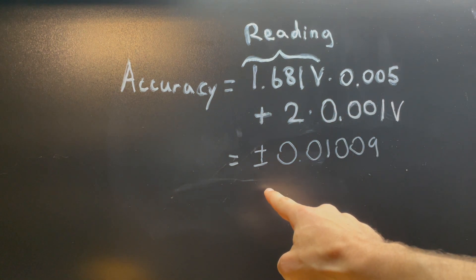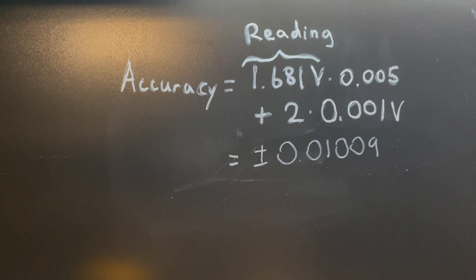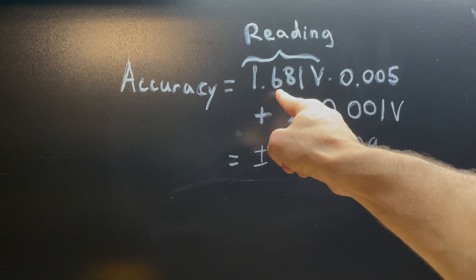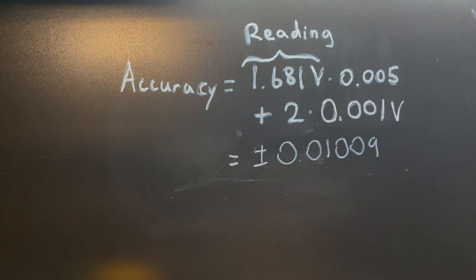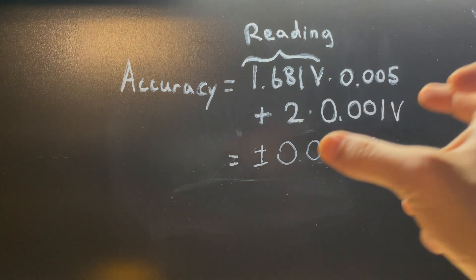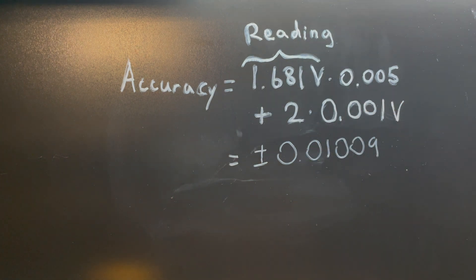When I calculate my accuracy down here, you can see I have a much better accuracy than I did in my other situation. And also because this number is lower, I have a lower overall variation that I can have, and so my accuracy is much tighter for this reading.